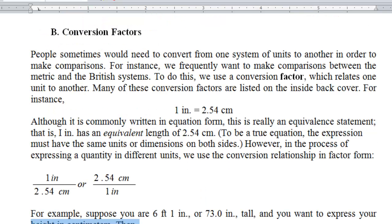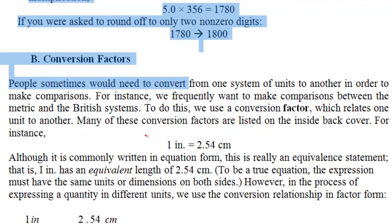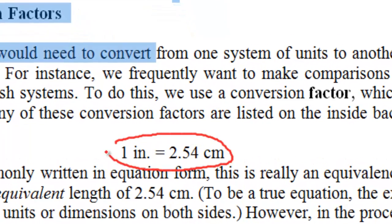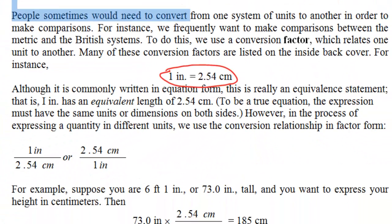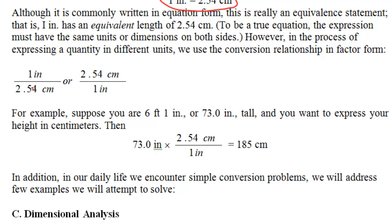Any conversion involves two terms: the conversion factor and the conversion statement. A conversion statement is a relation between two units — for example, 1 inch is equal to 2.54 centimeters. From the conversion statement you can derive conversion factors that enable you to convert between those two units. To convert inches to centimeters, you multiply by the conversion factor that has inches in the denominator and centimeters in the numerator, so the inches cancel out.